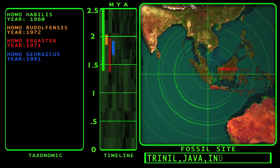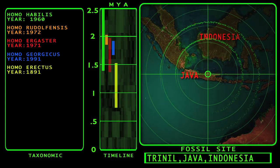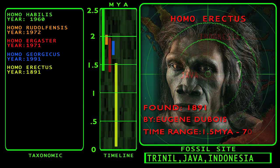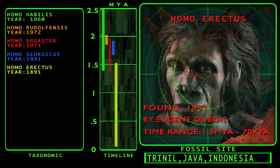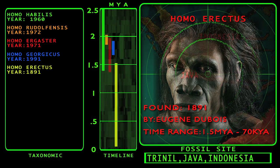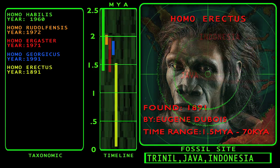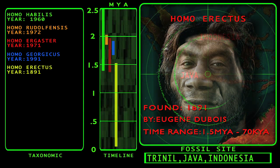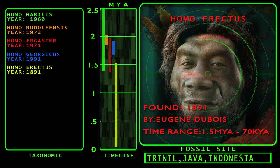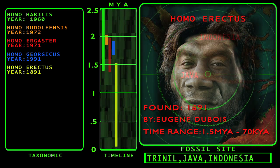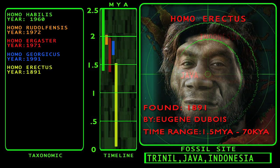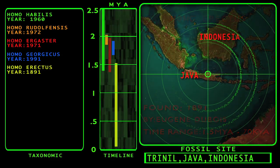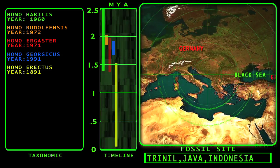Next on our timeline, we encounter Homo erectus, thought to have been the first hominin ancestor to migrate into Asia. The first fossil remains of Homo erectus were found in 1891 by Dutch anatomist Eugene Dubois in Indonesia at Trinil along the banks of the Solo River on the island of Java. Dubois assigned his find to a new species he called Pithecanthropus erectus, later reclassified as Homo erectus. The time range of Homo erectus is around 1.5 million years ago to as late as 70,000 years ago.